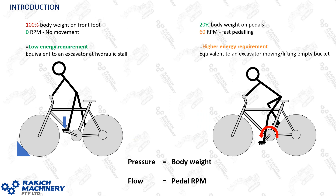A simple analogy: imagine you're sitting on a pushbike, your front wheel is chocked, you're not going anywhere, all your weight on the front foot and you're not pedalling — so it's a low energy requirement. If pressure is body weight and flow is RPM, that's low energy. But when you speed that up — in a low gear using only 20% body weight on each pedal but pedalling at 60 RPM — it's a much higher energy requirement.